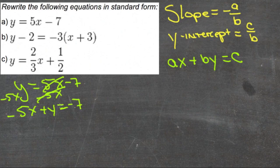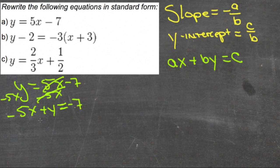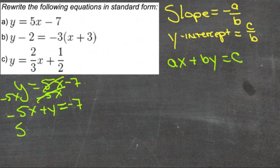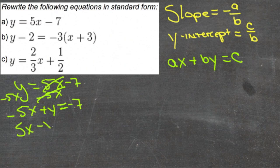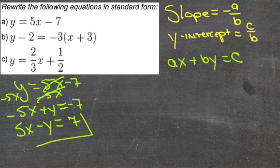Since our coefficient of x is currently negative, we'll divide everything by negative 1, which changes all the signs. That gives us 5x minus y equals 7. Now it's in standard form.